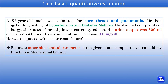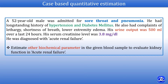The question is: estimate other biochemical parameters in the given blood sample to evaluate kidney function in acute renal failure. As in the case, the diagnosis is already mentioned and serum creatinine level is also mentioned. So the other relevant biochemical parameter to assess kidney dysfunction is urea, and that's why we are going to estimate urea in the given sample.